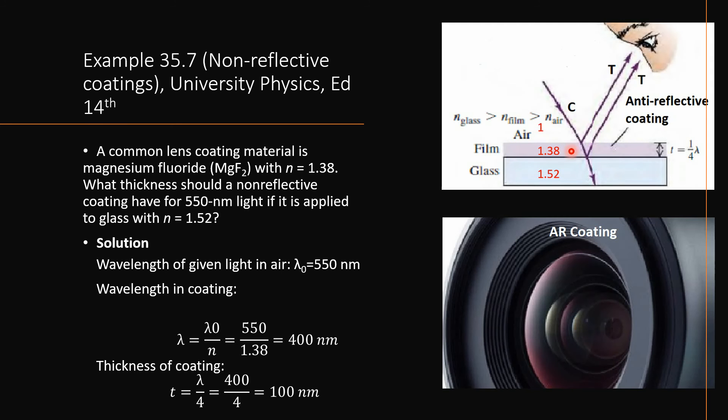We can find the wavelength of the light used in this magnesium fluoride thin film. λ = λ₀/n. Lambda naught is the wavelength of light in air medium, that is 550 nanometers, and the refractive index of the coating is 1.38.